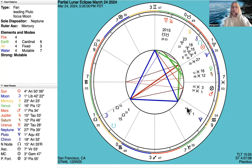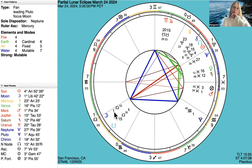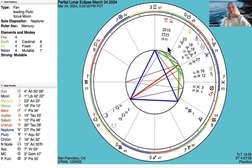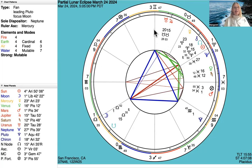We're just looking at the trine between Pluto in Aquarius — fixed air — and the moon in Libra, cardinal air. They're trining the midheaven. The midheaven is in Gemini in this chart.